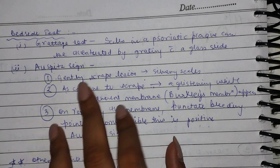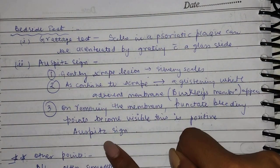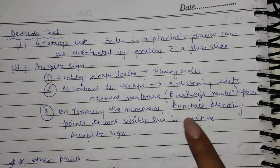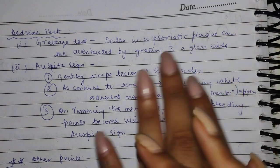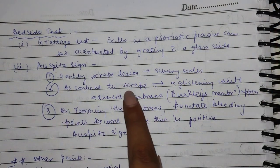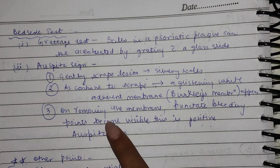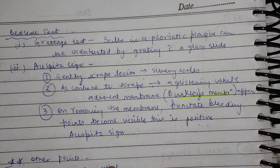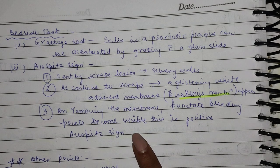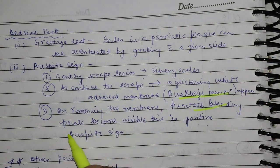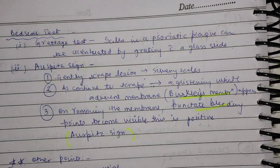If using the grattage test, it is positive. What happens in the Auspitz sign test? The scales will scrape similarly to the silver scale. When we scrape further, there will be a very adherent membrane called Berkley's membrane. When we remove the membrane, you can find little bleeding — punctate bleeding spots — which is shown in psoriasis. This is called punctate bleeding, or point bleeding. If you get all this, it means the Auspitz sign is positive — this is related to psoriasis.